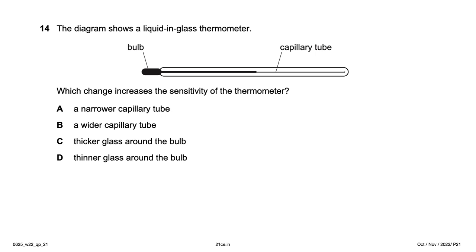The diagram shows a liquid-in-glass thermometer. Which change increases its sensitivity? Options include narrow or wider capillary tube and thicker or thinner glass around the bulb. To increase sensitivity we either increase the bulb volume or decrease the capillary tube diameter. Since increasing bulb volume isn't an option, we choose a narrow capillary tube — option A.